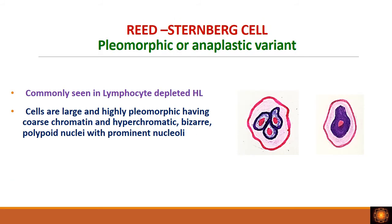The pleomorphic or anaplastic variant, as the name suggests, appears more pleomorphic. The nuclei have coarse chromatin with very prominent nucleoli. The cell can have a single hyperchromatic nucleus with prominent eosinophilic nucleoli, or it can be multilobated with coarse chromatin and prominent nucleoli. This variant is typically seen in the lymphocyte-depleted type of Hodgkin's lymphoma.